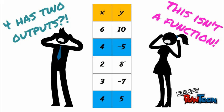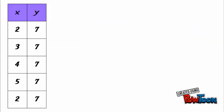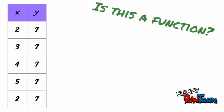That's a good sign that this is not a function. Now here we have a very interesting case. We have multiple inputs all making the same output. So is this a function? Let's go back to our vending machine example and see if we can figure this out.